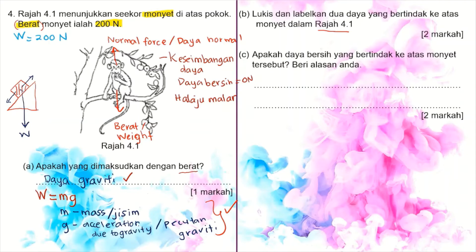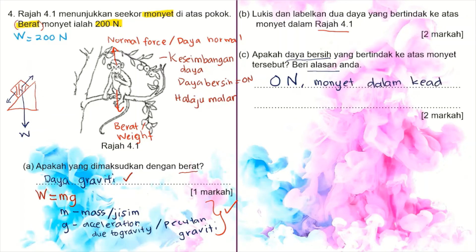Soalan C: apakah daya bersih? Oleh kerana monyet berada di atas pokok dan tidak bergerak, daya bersih adalah kosong newton. Berikan alasan: monyet dalam keadaan pegun. Kosong newton untuk markah pertama, dan alasan untuk markah kedua.